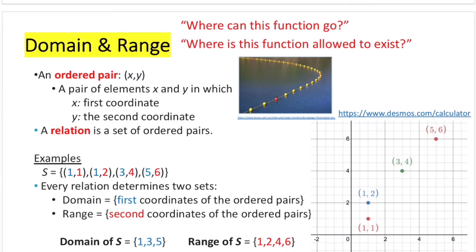When it comes to domain and range, we need to ask ourselves two questions. The first question is: where can this function go? The second question is: where is this function allowed to exist?